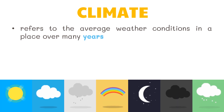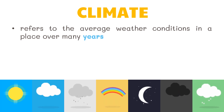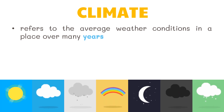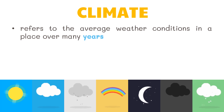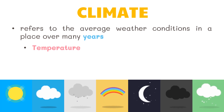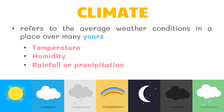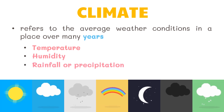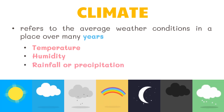The climate in the Philippines is tropical and maritime. It is characterized by relatively high temperature, high humidity, and abundant rainfall. Temperature, humidity, and rainfall or precipitation are the most important elements of climate.